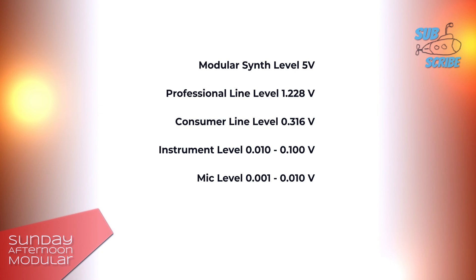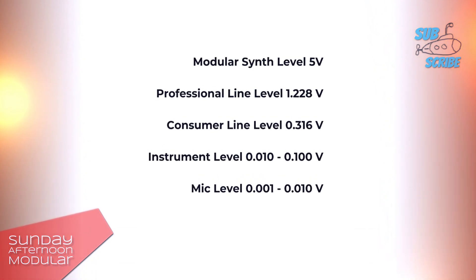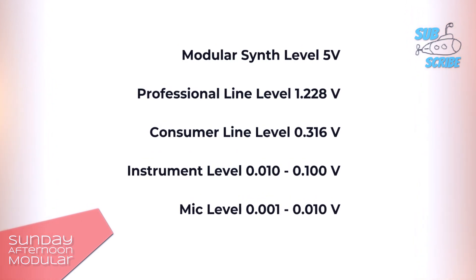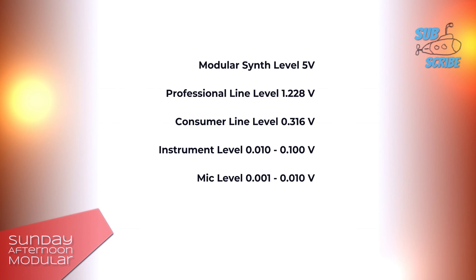If we now look at line level, we see that there are two different ones. One is the consumer level, like your stereo system or CD player at home, and the other one is professional line level, which can be a DJ mixer. You already see that with the 5V of a modular synth, we are quite above the professional line level, and even more above the consumer line level. So the signal coming from a modular synth would be what we call a hot signal. Going directly into an audio interface or DJ mixer could damage the device, because it is not expecting such a hot signal.